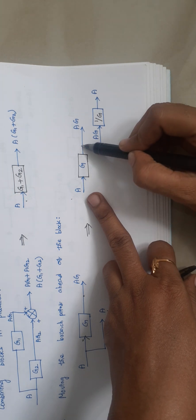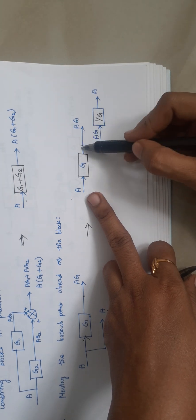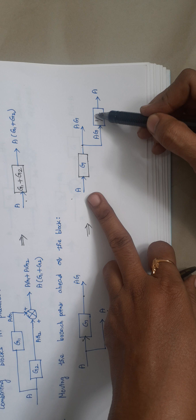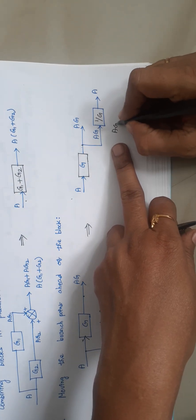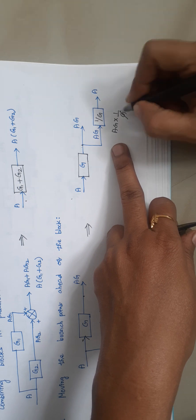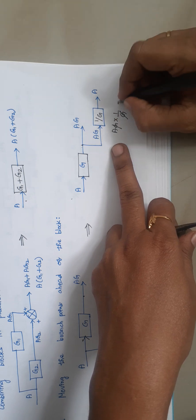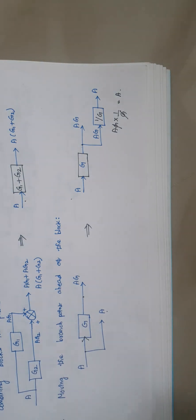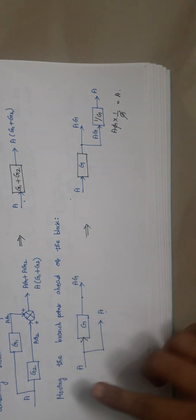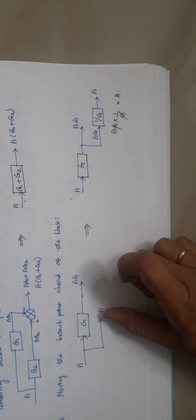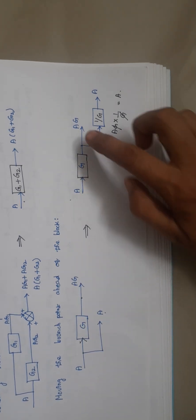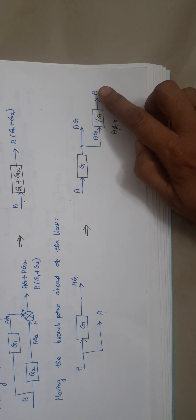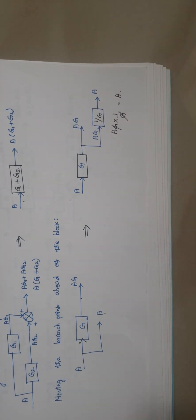Here in the original diagram the input is A and the outputs are A·G and A. Similarly, in the modified diagram the input is A and the outputs are again A·G and A — both representations give the same result. Hope you all understand. If you have any doubt, let me know in the comment section.